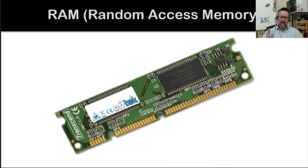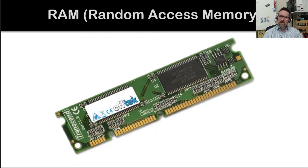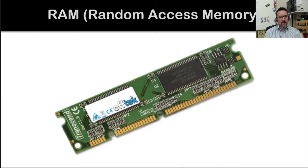Random access memory — we have discussed this in a previous video. This is a form of storage; however, it is temporary storage, not permanent. It only holds whatever you're working with at the time. When you are done, you save your work — because if you don't, the RAM gets cleared when you shut down the computer or if there's a power failure.